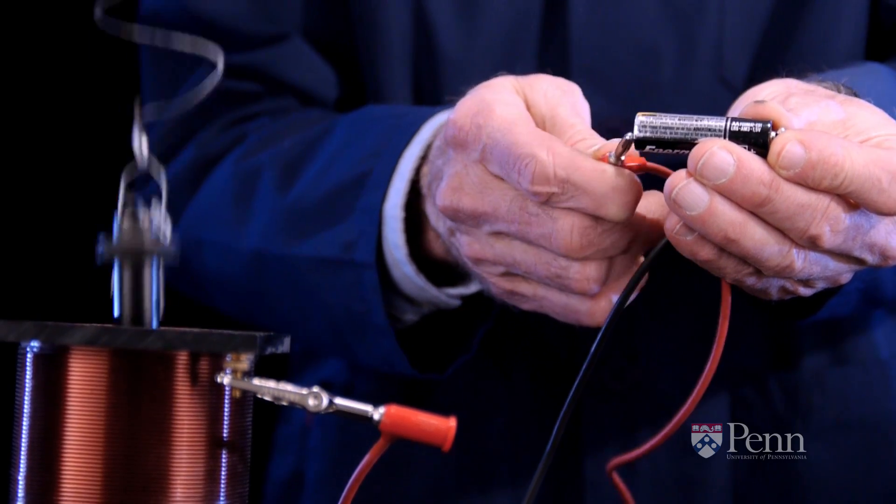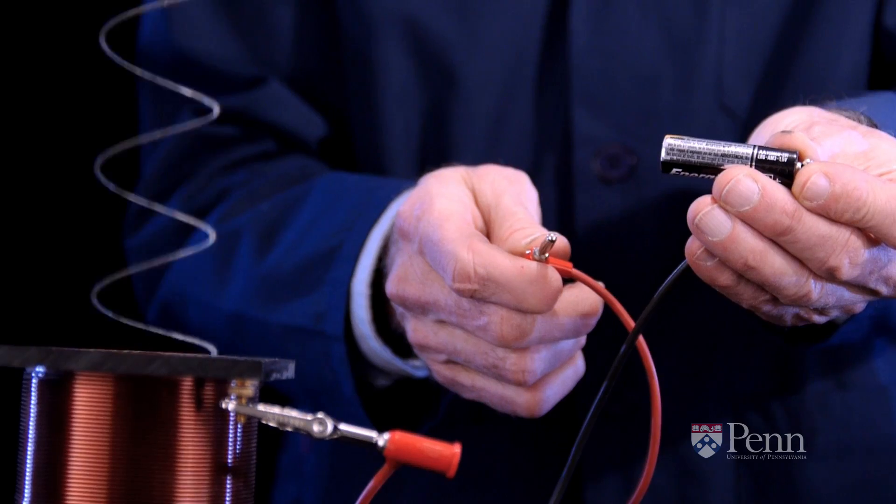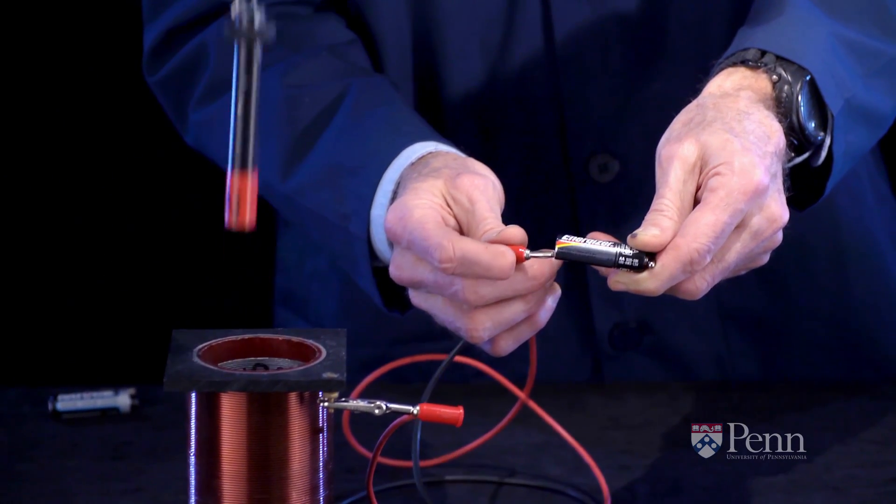We'll take a small battery and connect it to the second coil and see that when we put electricity into the coil, it produces a magnetic effect on the hanging magnet. And the hanging magnet moves vertically.